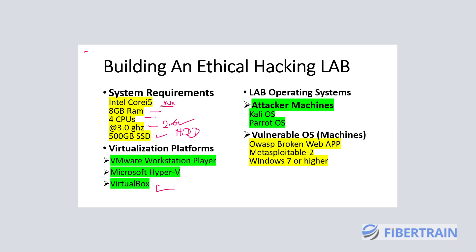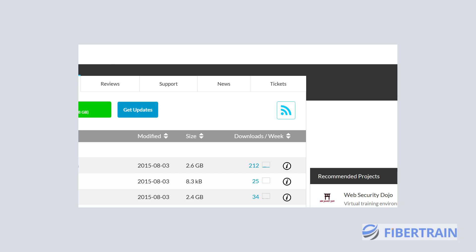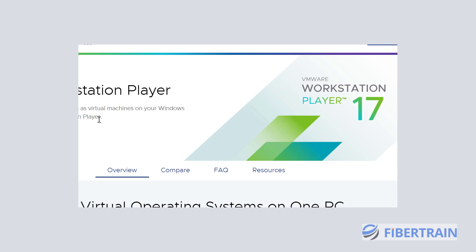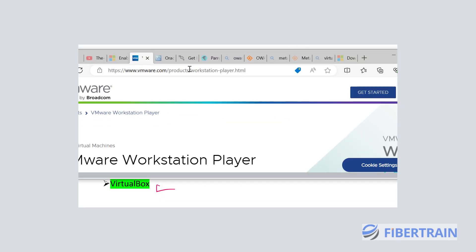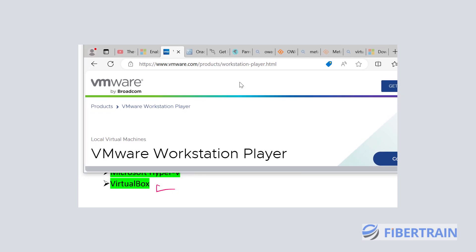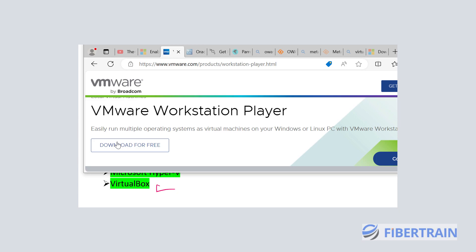Here we have VMware Workstation Player version 17 on display, and we can download this for free — no licensing fee required. If you scroll down you'll see 'Download for Free.' Click on it, follow the instructions on screen, get it installed on your PC, and then on top of VMware Workstation Player you can go ahead and start installing other lab software for this training.